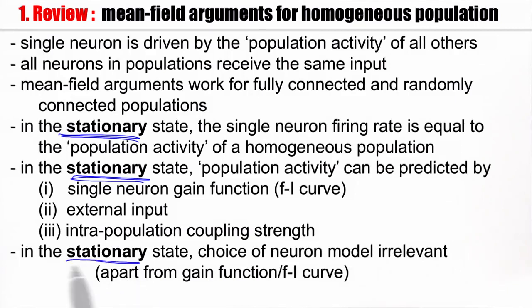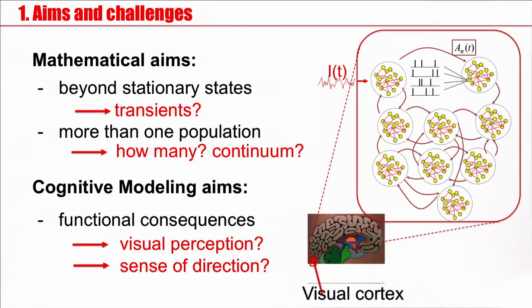Now, in the stationary state, the choice of neuron model is irrelevant. The only thing that counts is the gain function, also called the f-I curve. Now, this is not necessarily true outside the stationary state. So, for this week, the mathematical aims are to go beyond stationary states. How about transients? If I switch on a current, how does a population react? And I would like to have more than one population. I would like to have interacting populations, many populations. And the next question is, can we write down a continuum of populations? These are the mathematical aims.